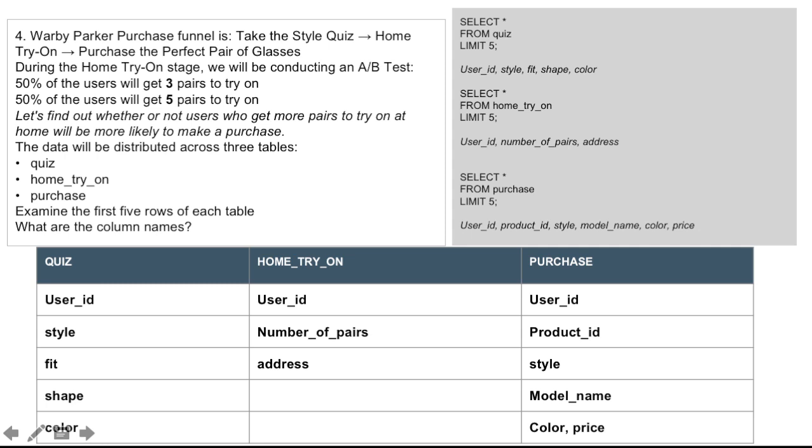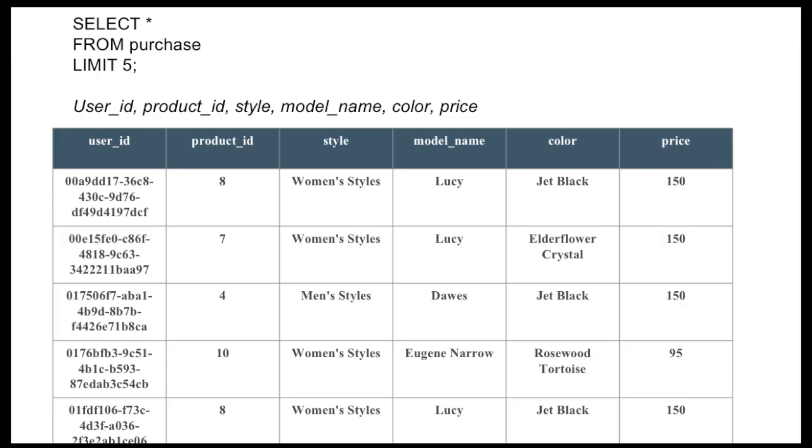A home try-on, which was a segment of the Warby Parker population who got to try on glasses at home, that had a user ID tag, number of pairs, and address, and then the purchase table, which contained user ID, product ID, style, model name, and color, as well as price.